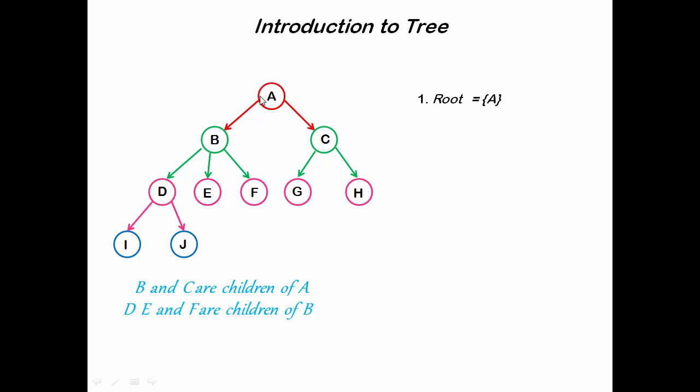Now see here, A's child is B and B's children are D, E, and F. So we can say D, E, and F are the grandchildren of A. Similarly, we can also say A is the grandparent of D, E, and F.